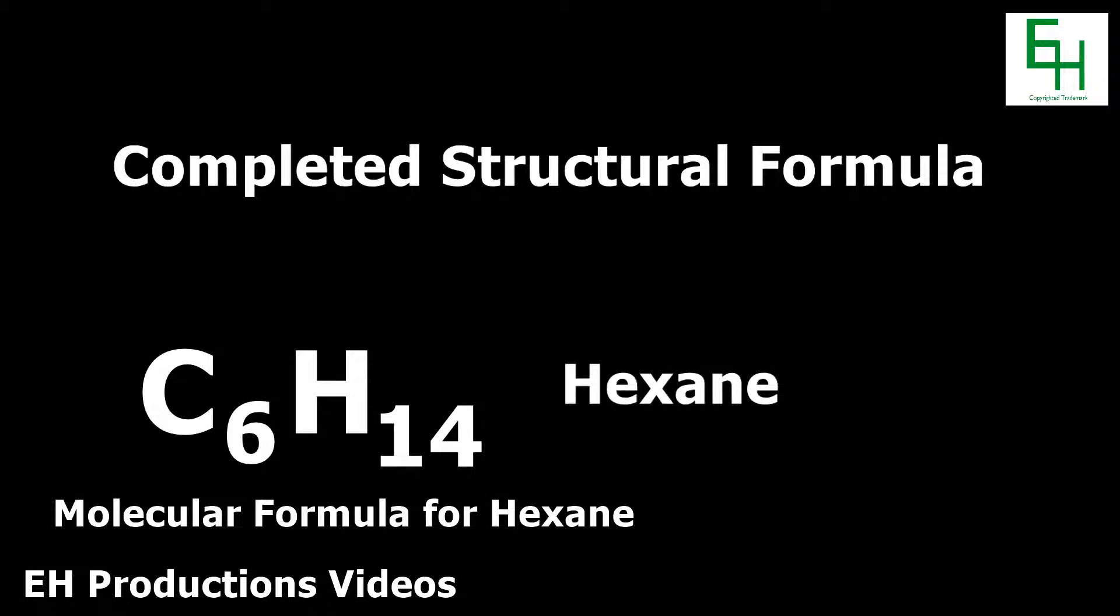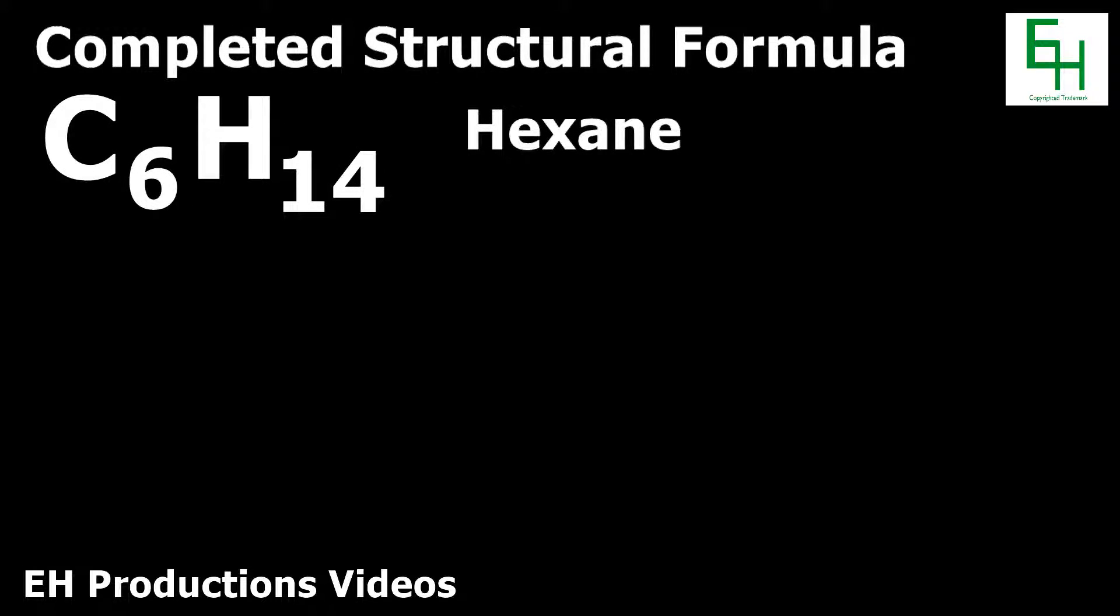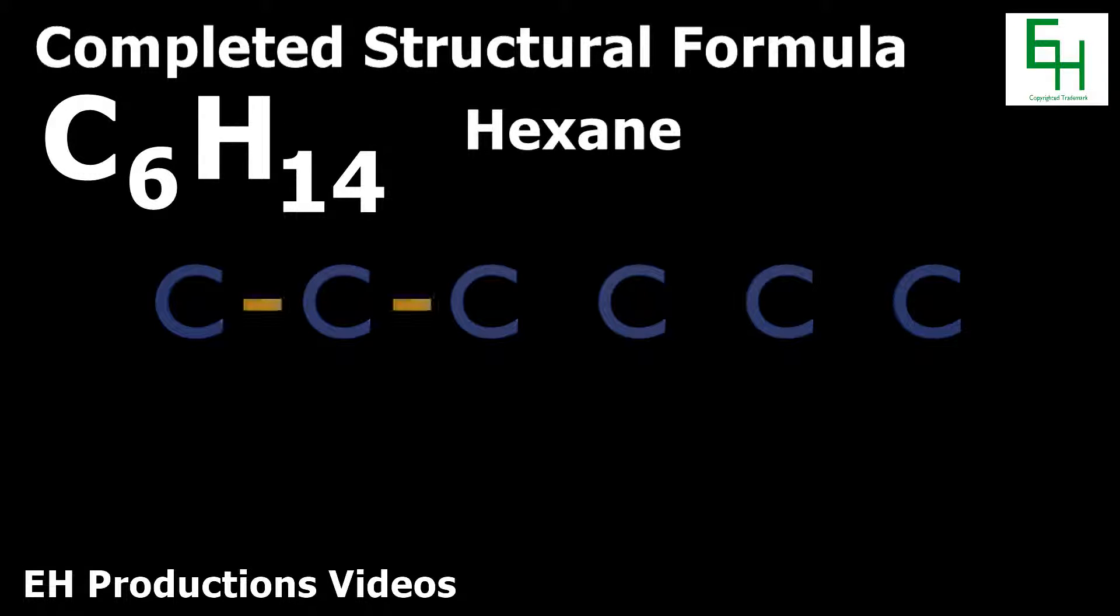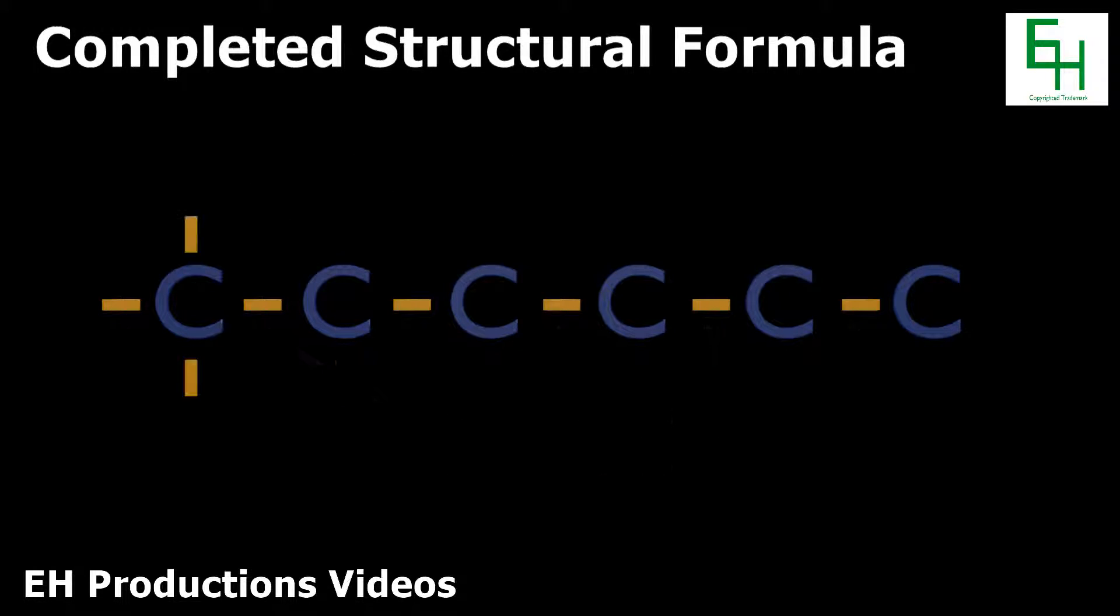Next, we got the completed structural formula. Let's use hexane for this example. Previously, we found out that the molecular formula for hexane is C6H14. Using this, we'll start this off by drawing, or in my case, animating, six letter C's with lines connecting them. These represent the single bonds connecting the carbon atoms. Now let's draw more lines sticking out and attach hydrogens to them.